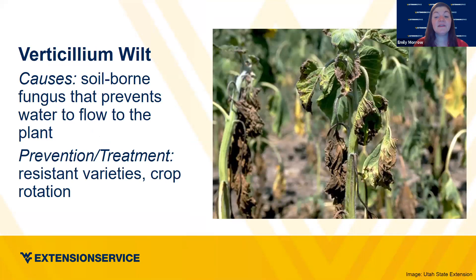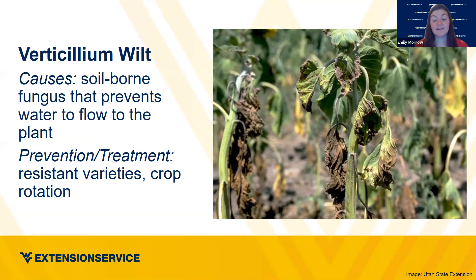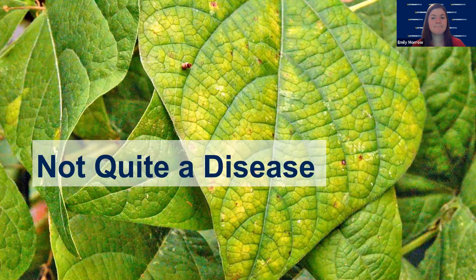Verticillium wilt is another soil-borne fungus you'll see in some tomatoes. It prevents water from flowing to the plant and causes wilting — you can see that plant is not looking healthy at all. Crop rotation and resistant varieties are key. When you see issues get to this stage, sometimes it's better to just remove the plant and move on to keep it from spreading to other plants. If you catch it in one plant early, you can keep it from spreading to subsequent plants.